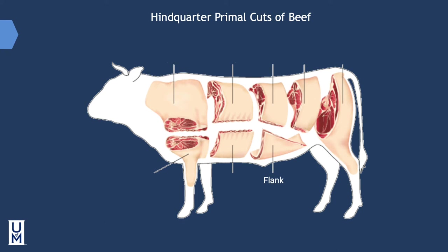The flank is located directly beneath the loin, posterior to the short plate. It accounts for approximately 6% of carcass weight and contains no bones. Although quite flavorful, it is a less tender cut with a good deal of fat and connective tissue. Flank meat is usually trimmed and ground, with the exception of the flank steak, which is often marinated, broiled, and sliced thinly to prepare a dish known as London broil.